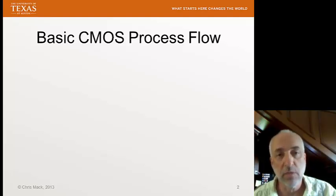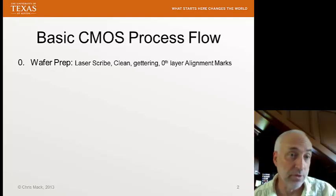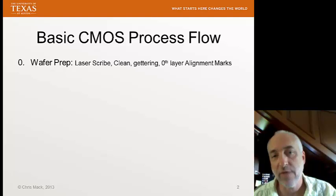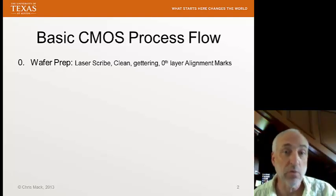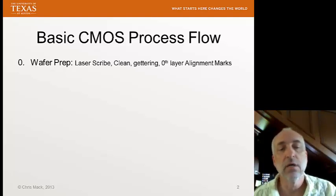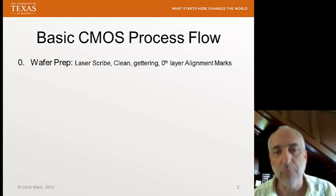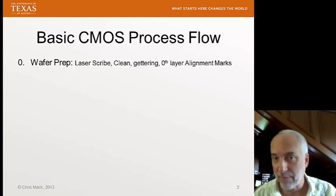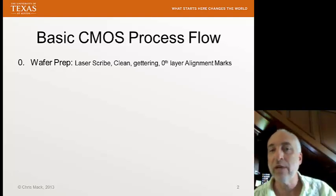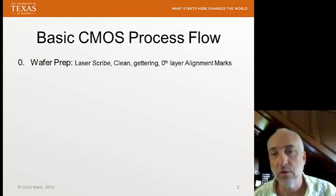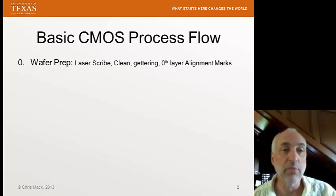Let's go through some basic typical process steps. First, I'll call it step zero: wafer preparation. We're going to laser scribe the back of the wafer to put a unique ID number, sometimes a barcode, on those wafers. We're going to clean the wafers and do gettering — that's where we implant big imperfections into the back of the wafer that will attract other defects away from the surface where our devices will be. And we'll do zeroth layer alignment marks that the rest of the circuitry will be aligned to as we build up our patterns.